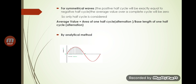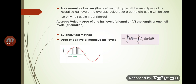Using the analytical method, the area of a positive or negative half cycle is found by integration. The area under the curve is given by integrating from 0 to π: the area of the positive half cycle equals the integral from 0 to π of i dθ, where the instantaneous value i equals Im sin θ. So the area of the positive half cycle is the integral from 0 to π of Im sin θ dθ.